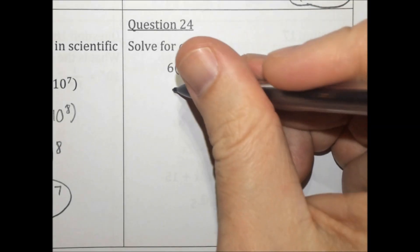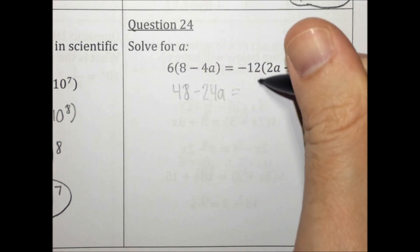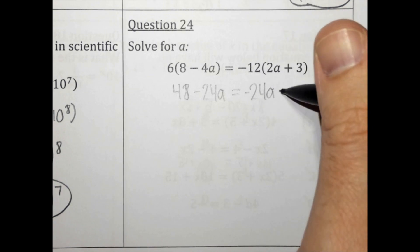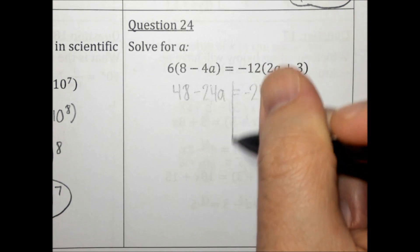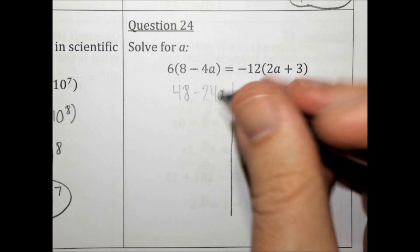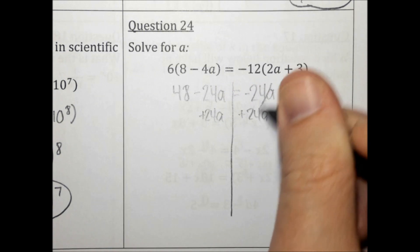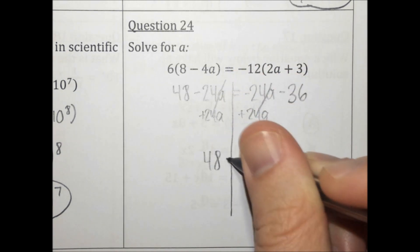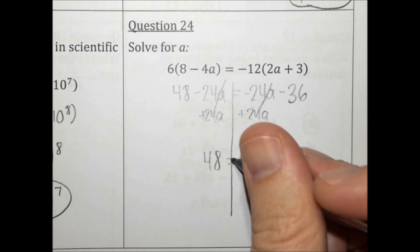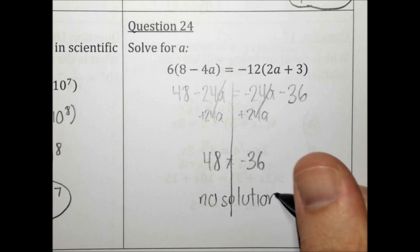Solve for a. Let's distribute: negative 12 times 2a equals negative 24a minus 36. We have variables on both sides. They're actually the same value, so when we try to move one, they both get eliminated, and we're left with 48 equals negative 36. That's not true, so there is no solution.